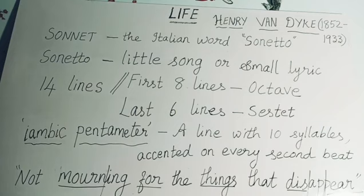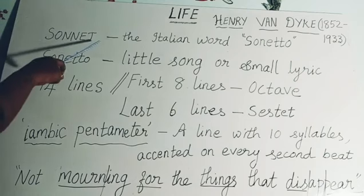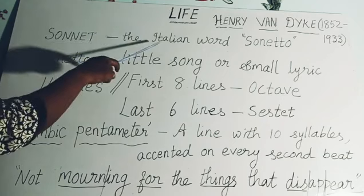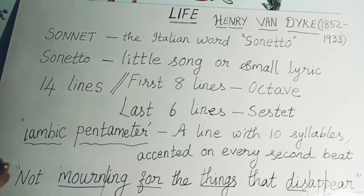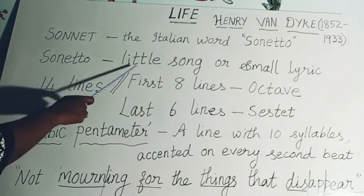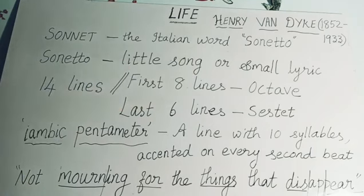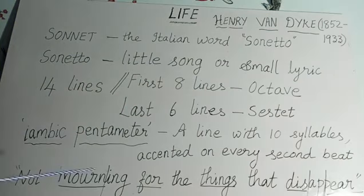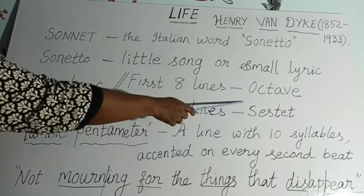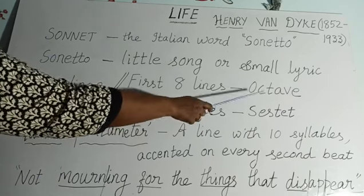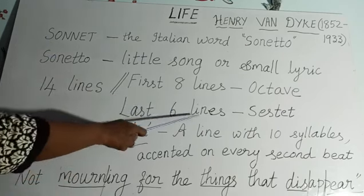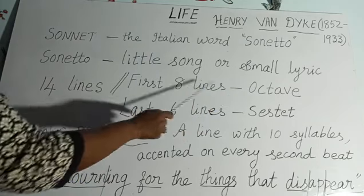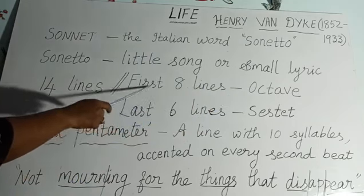This poem is a sonnet. The word sonnet is derived from the Italian word 'sonato,' which means a little song or small lyric. A sonnet has 14 lines. The first 8 lines are called the octave, and the last 6 lines are called the sestet. So totally 14 lines, 2 stanzas.